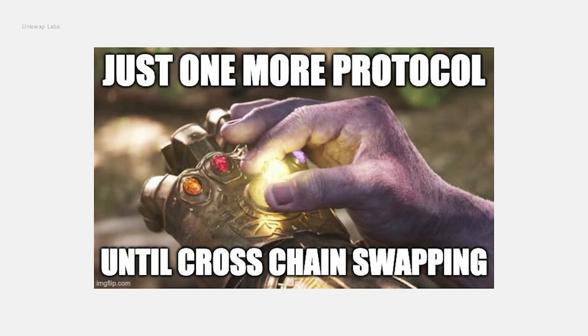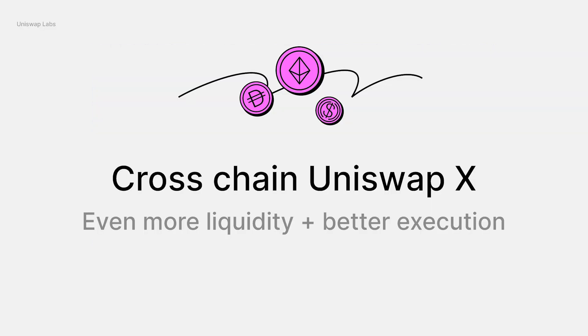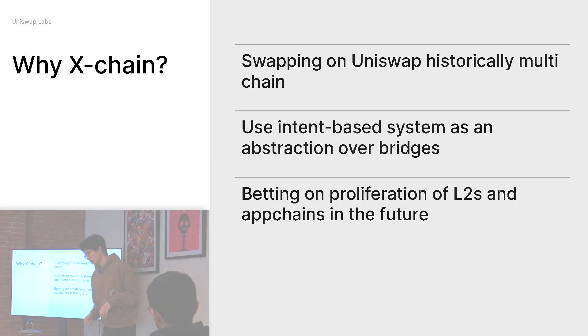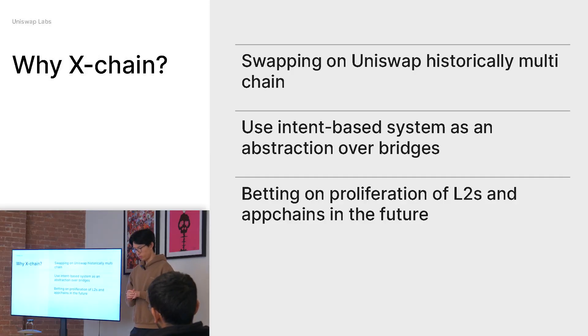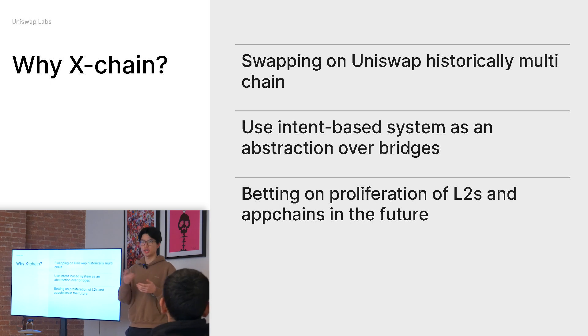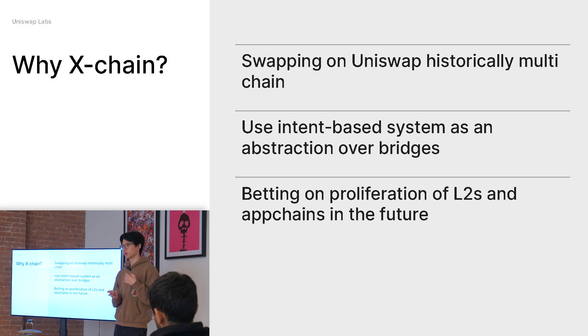Uniswap has a lot of protocols — we have V4 coming out. The one thing we don't have is cross-chain swapping. We have multi-chain stuff, we have Uniswap X now, which gave us more interoperability and more customization on how an order can be filled. But what if we get more interoperability on what kinds of networks and chains can be swapped between? Cross-chain X — even more liquidity and even better execution. A lot of protocols right now do cross-chain messaging, swap-and-bridge, bridge-swap, and even atomic swaps. We definitely want to keep atomic swaps, and our idea is to use cross-chain Uniswap X as an intent-based abstraction over bridges.